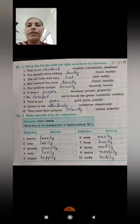Number 2: The people were talking loudly. जो people है वो loudly से talk कर रहे, so answer is adverb है, यहाँ पर loudly. Number 3: The old lady was very sad. यहाँ पर जो old lady है वो बहुत sad है, so answer is sad.